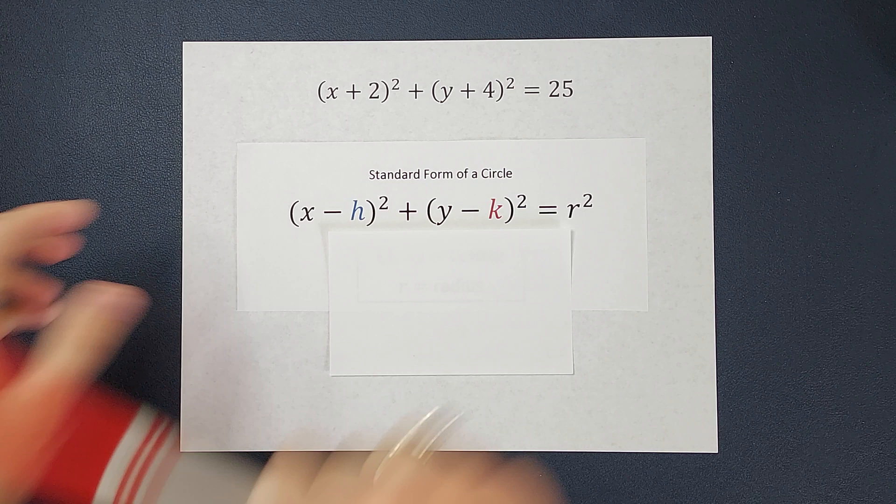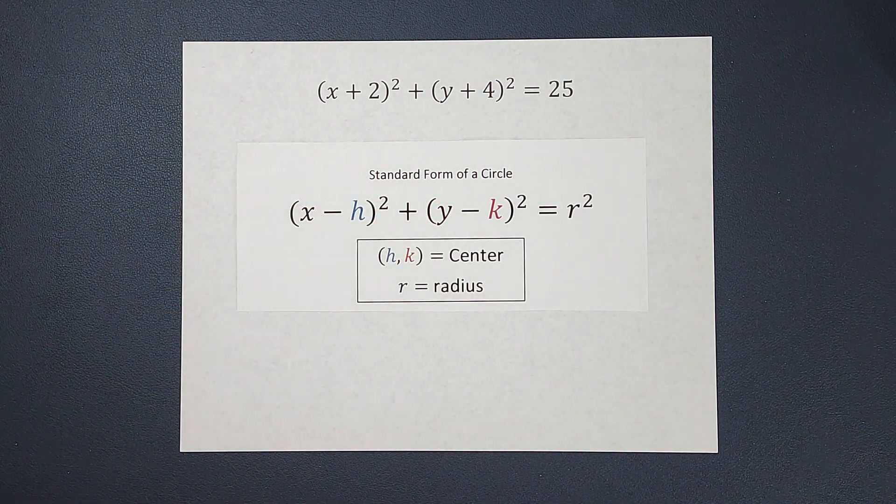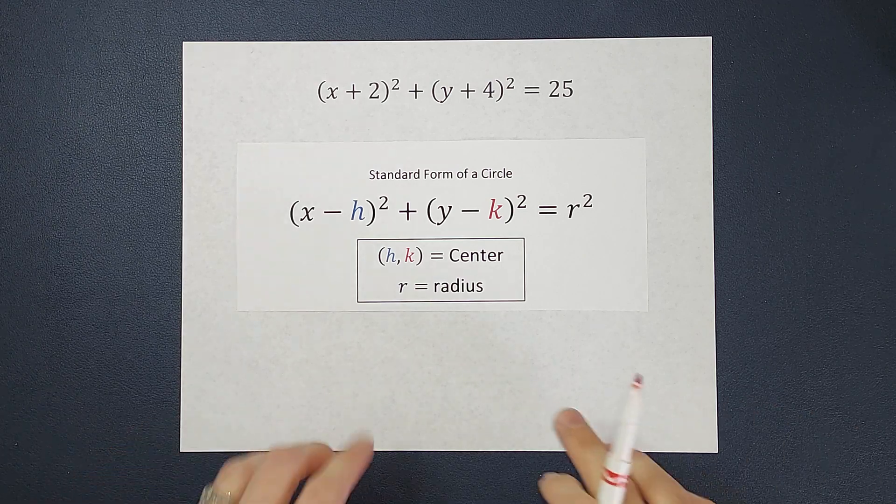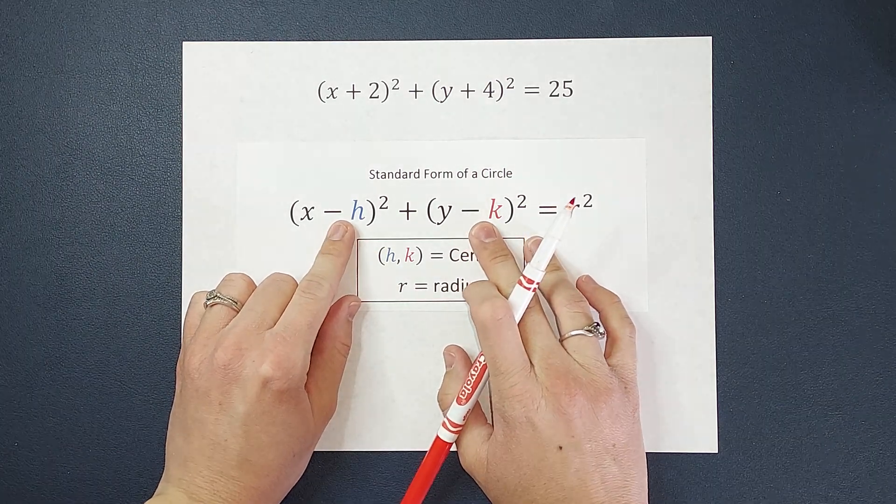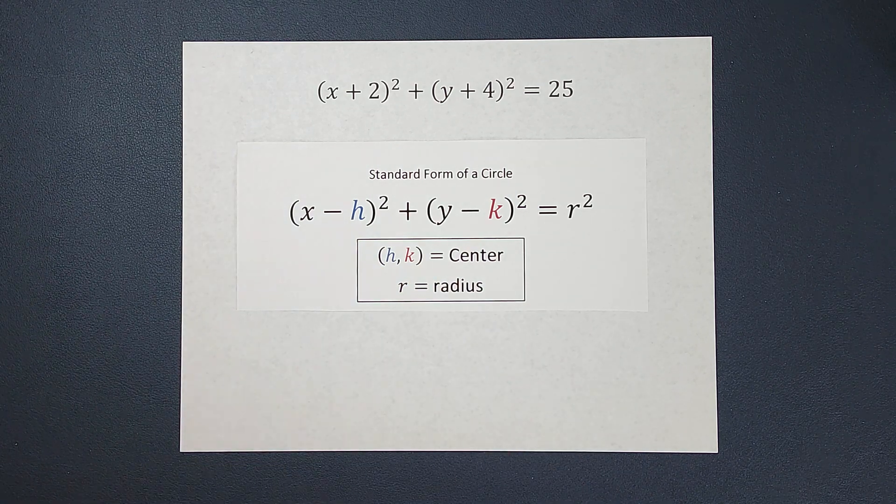So when we are in this form, my h and k are the center and the r is the radius. And you'll notice here h and k are negative and for the center, they're positive. So you switch the sign, whatever it is.